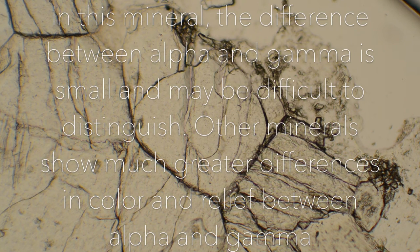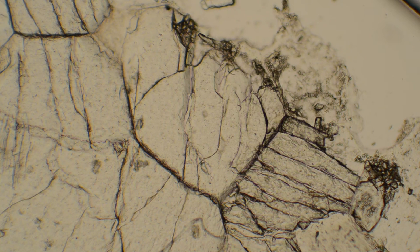In this mineral, the difference between alpha and gamma is small and may be difficult to distinguish. Other minerals show much greater differences in color and relief between alpha and gamma. For an example where this is relevant, watch the linked video on how to fully characterize a mineral grain. In this example, I also go over how to characterize along beta.